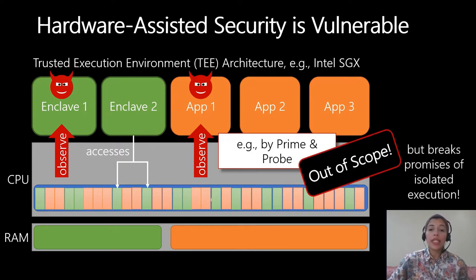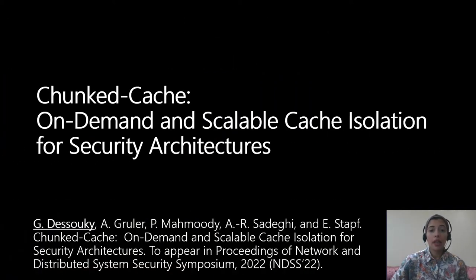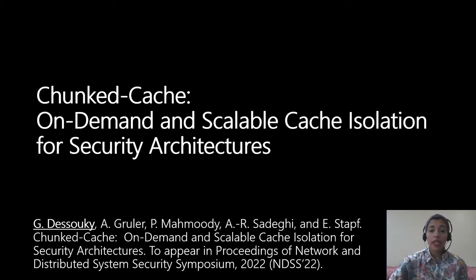Although these attacks are out of the official threat scope covered by industrial solutions such as Intel SGX and ARM TrustZone, they nevertheless bypass their hardware protection mechanisms and break their security guarantees, rendering the entire architecture useless for its design purpose. This requires that we take a step back and rethink our processor microarchitecture design from the ground up, more particularly for security architectures.